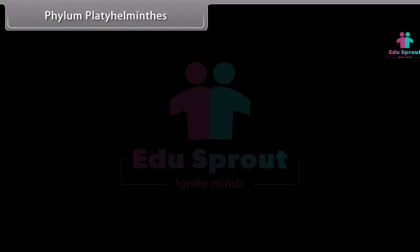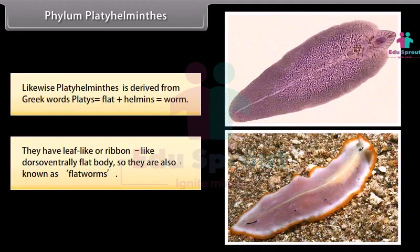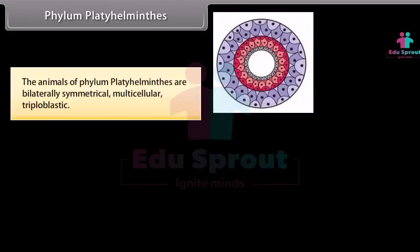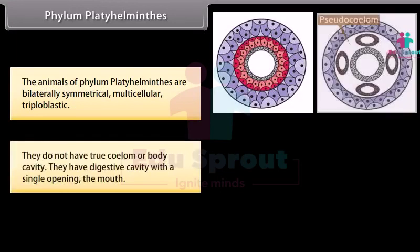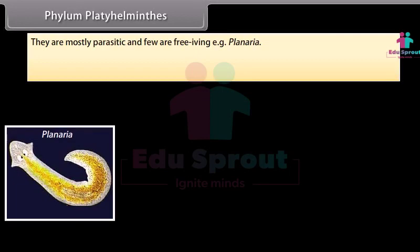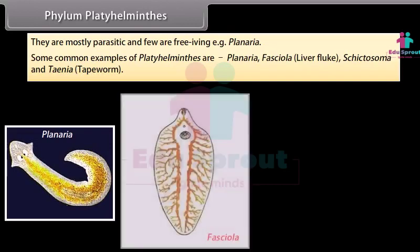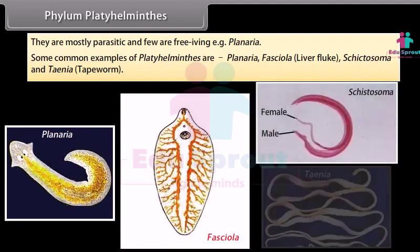Phylum Platyhelminthes is derived from Greek words: Platis, meaning flat, plus Helminthus, meaning worm. They have leaf-like or ribbon-like, dorsal-ventrally flat bodies, so they are also known as flatworms. The animals of Phylum Platyhelminthes are bilaterally symmetrical, multicellular, and triploblastic. They do not have a true coelom or body cavity. They have a digestive cavity with a single opening — the mouth. They are mostly parasitic and few are free-living, e.g. Planaria. Common examples are Planaria, Fasciola (liver fluke), Schistosoma, and Taenia (tapeworm).